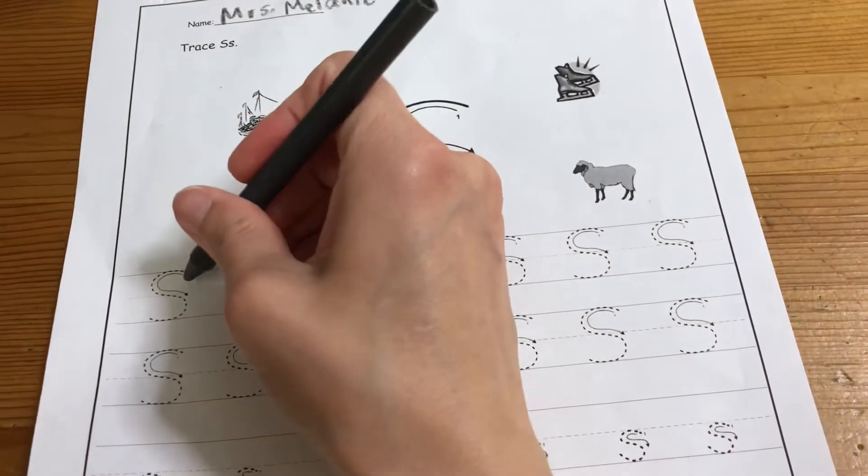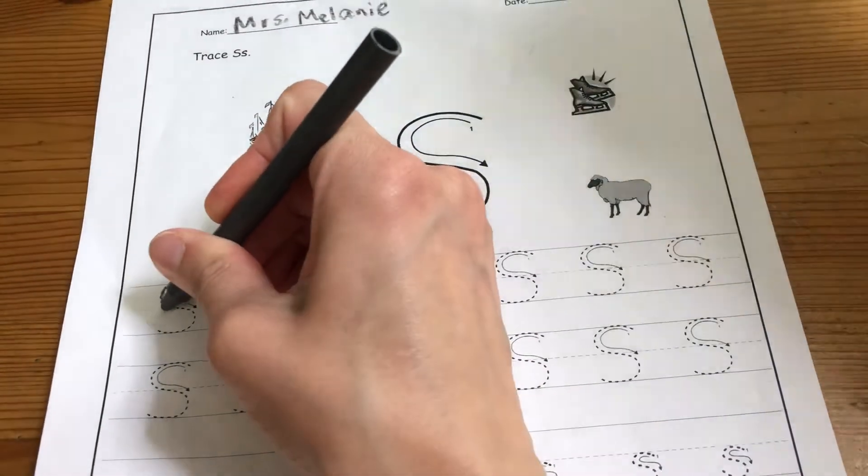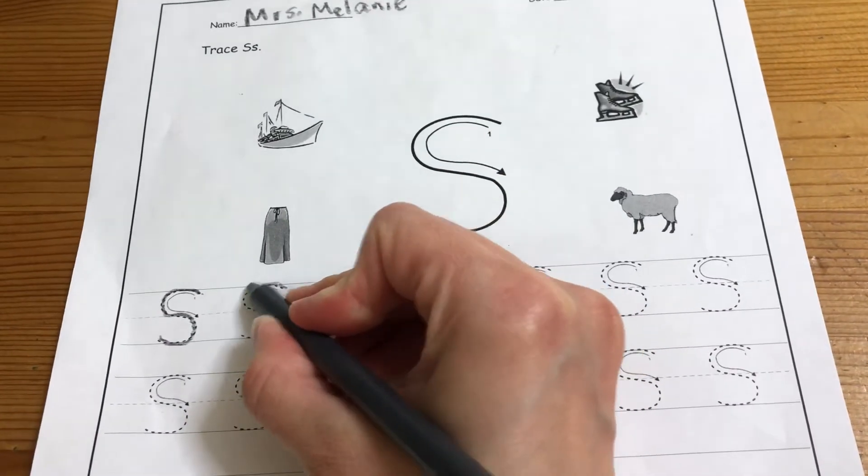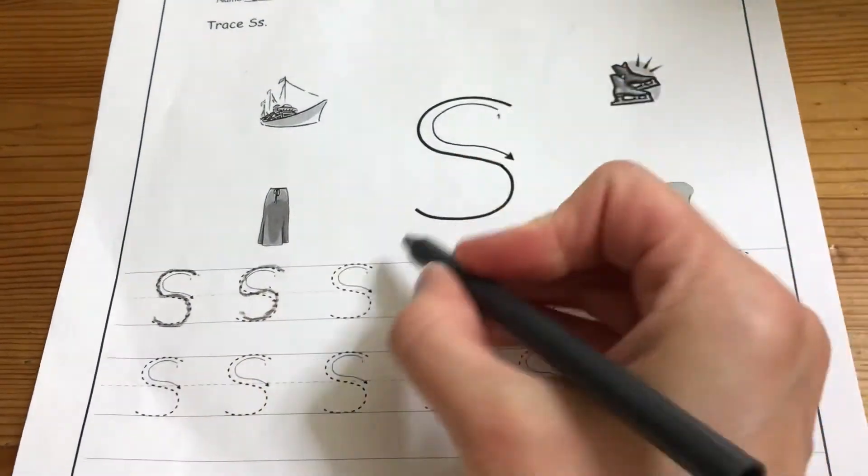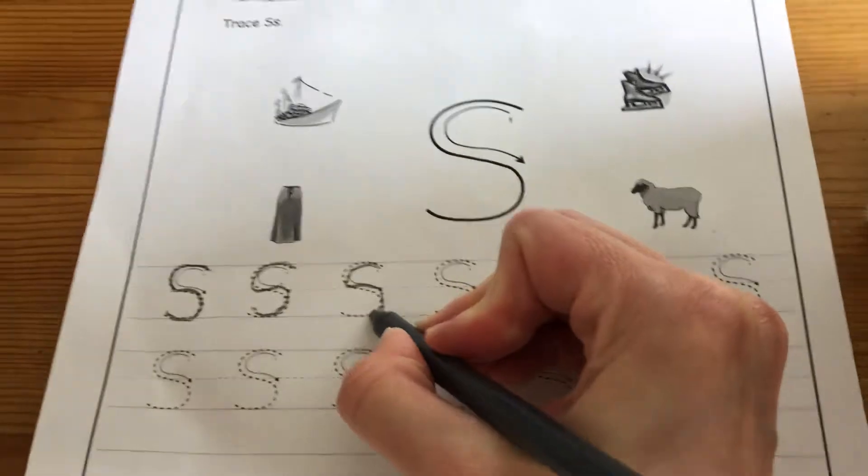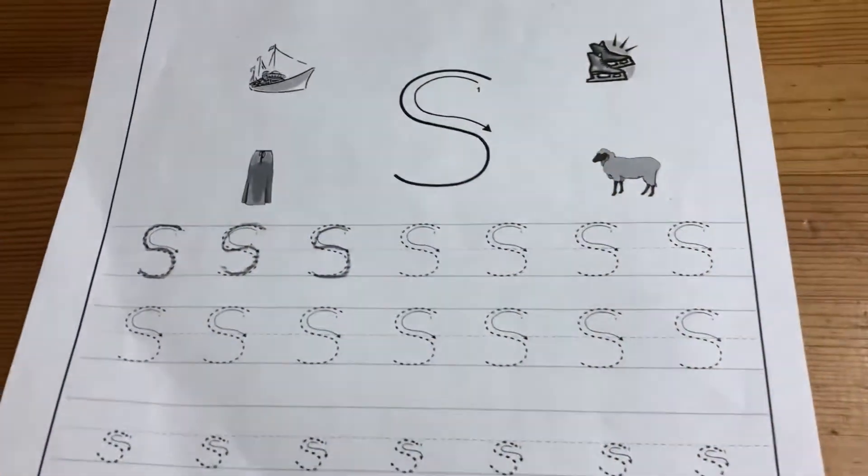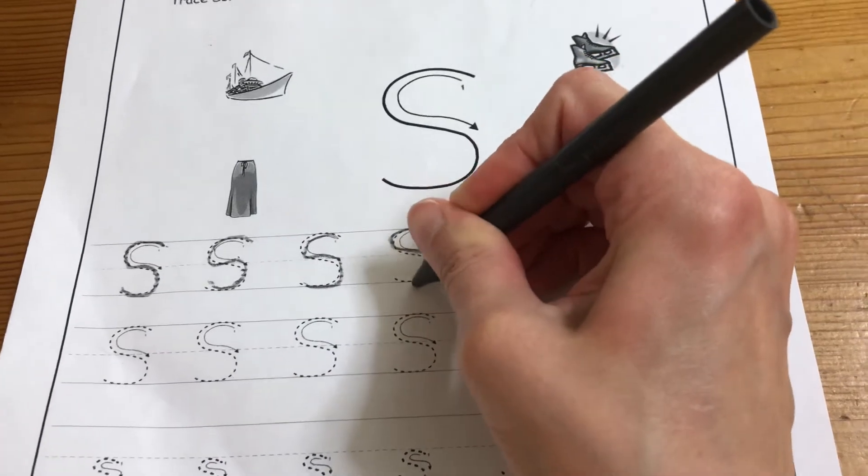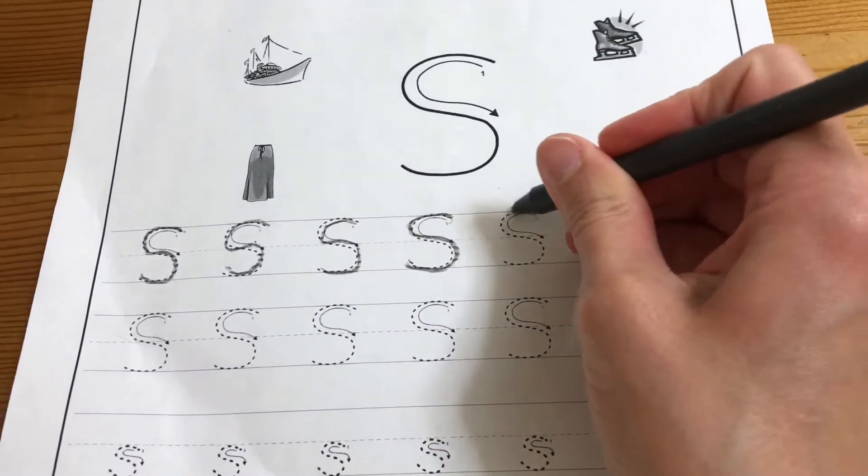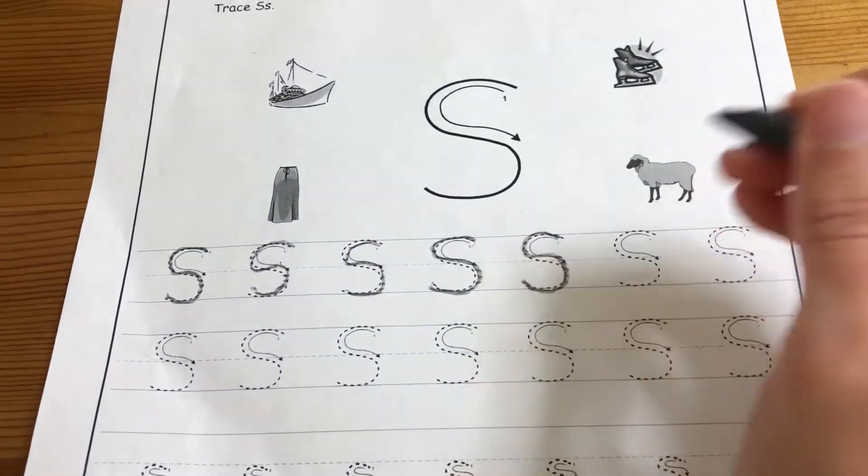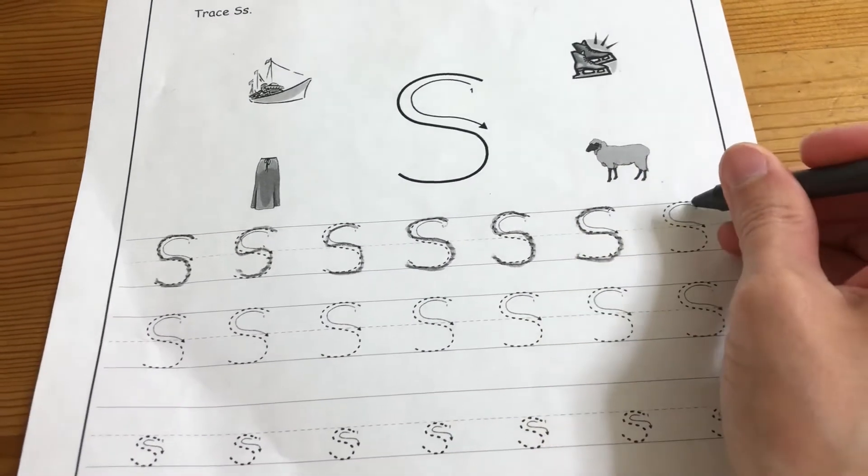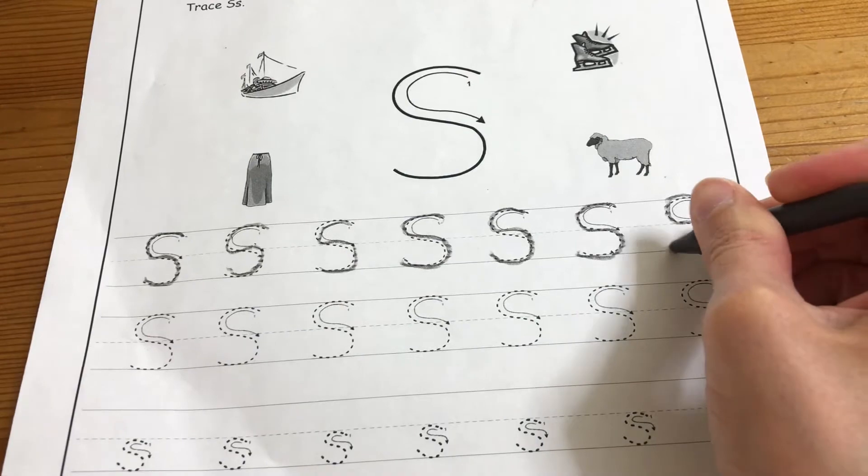Now, S is fairly easy. We just go around and then around in the other direction. So we want to make an S. It's very swirly, kind of like a snake, which also starts with an S. So we just go around and then we switch and go around in the other direction.